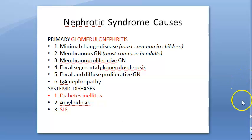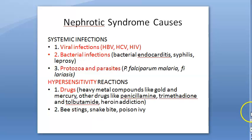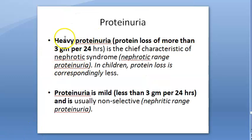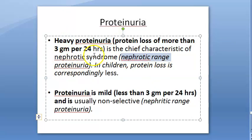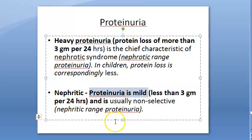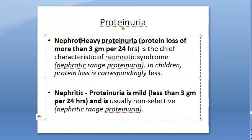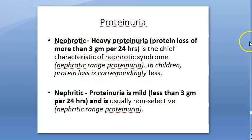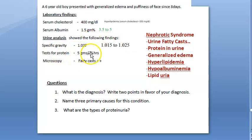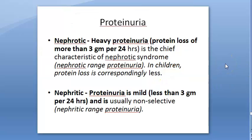So we are done with the causes. What are the types of proteinuria? Heavy proteinuria in the nephrotic range is more than 3 grams per 24 hours. In nephrotic syndrome, the proteinuria is actually heavy — more than 3 grams per 24 hours. This kid has a lot of proteinuria, so definitely it is nephrotic syndrome.